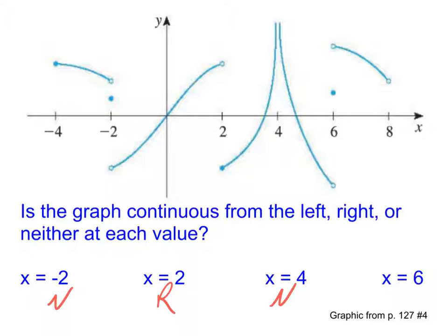And at x equals 6, first I look for where my function value is. And I see that it's there. And again, I see I'm not approaching that from either side. And so that is also going to be neither.